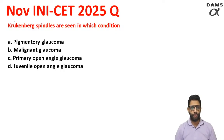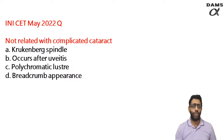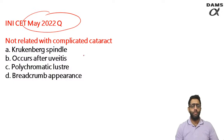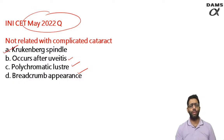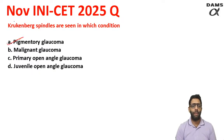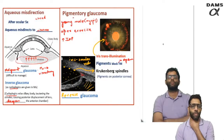Krukenberg spindles are seen in pigmentary glaucoma. Why PYQs are very important — this was seen in a previous exam in May 2022, where the question was about complicated cataract. Complicated cataract is most commonly seen after any intraocular pathology like uveitis, showing a polychromatic luster and posterior subcapsular cataract. But Krukenberg spindle was one of the options there — so if you had solved that PYQ, you should have known Krukenberg spindles can be asked and are seen in pigmentary glaucoma.